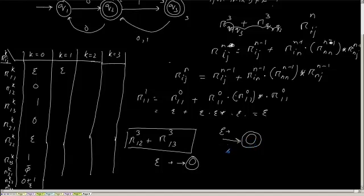In the last class, we discussed: what about phi? Phi is something that does not represent any language — it cannot represent any language. So, I cannot reach any final state. It will be like: I am in a starting state, but I cannot reach the final state. That is represented by phi.